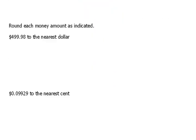Now just straight money rounding. Round each money amount as indicated. We want to round this number to the nearest dollar. Remember, the dollar is the ones position. So if we round to the nearest ones, we have to look one place to the right to see what to do. Since this is a nine, that says we're going to round this digit up.